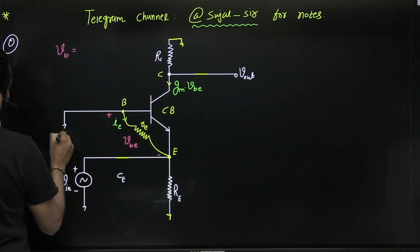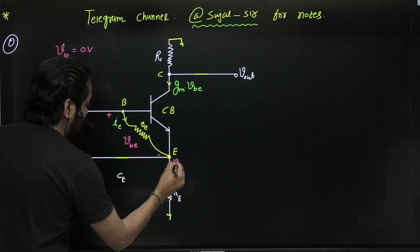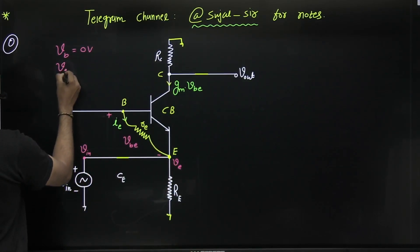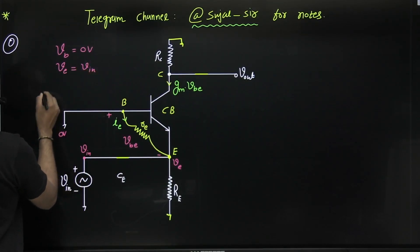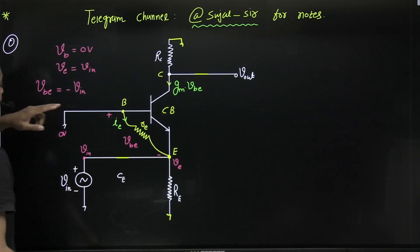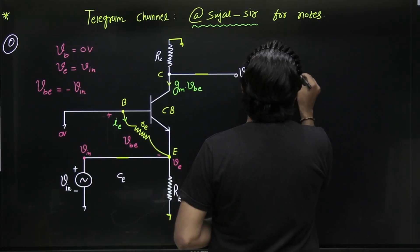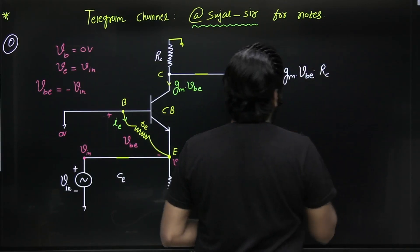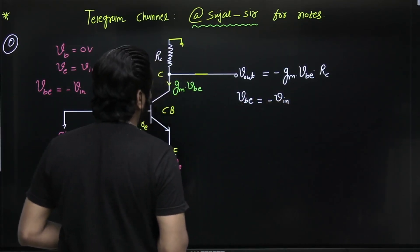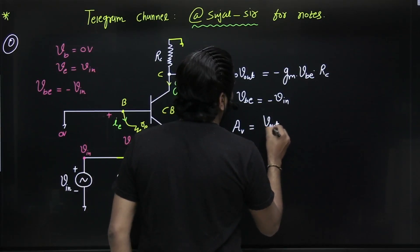V_BE is the potential drop between base and emitter. The base terminal is connected to ground, so base voltage is 0 volts. The emitter voltage is V_IN. Therefore, V_BE = V_B − V_E = 0 − V_IN = −V_IN. On the output side, V_out = −G_M · V_BE · R_C. Substituting V_BE = −V_IN gives V_out = G_M · V_IN · R_C.